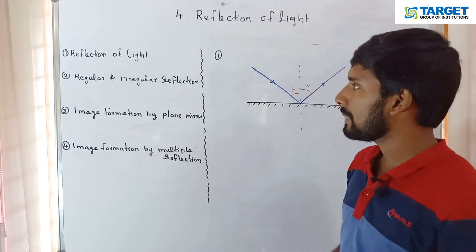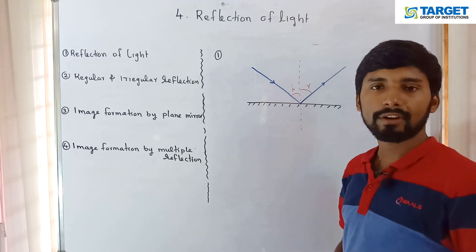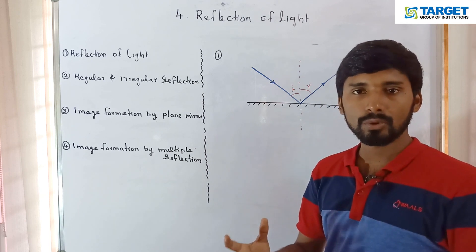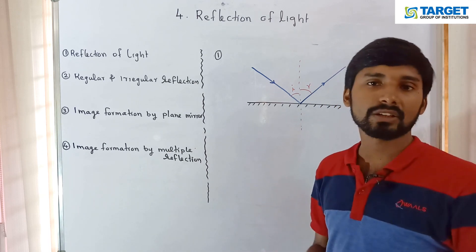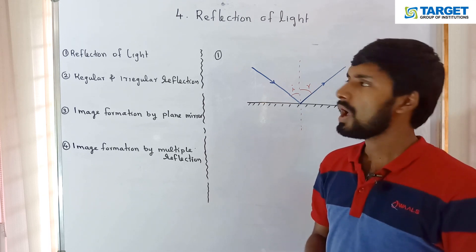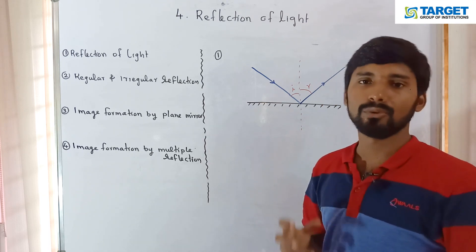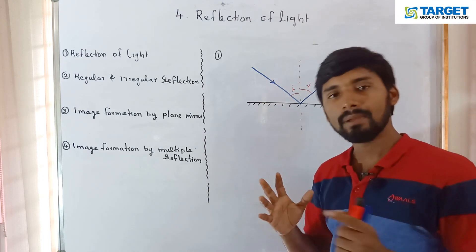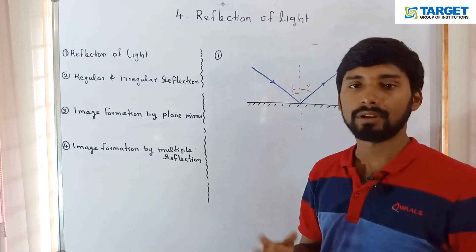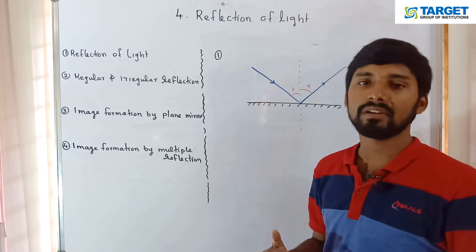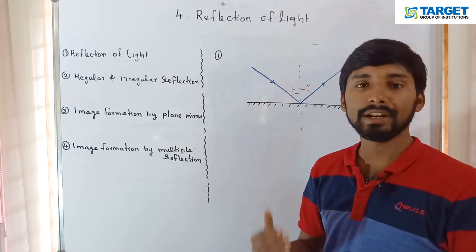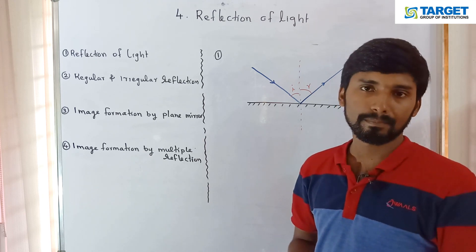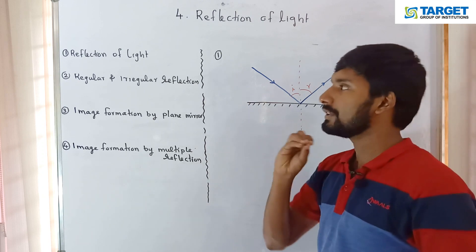So the first topic is reflection of light. What is reflection of light? Light is a wave — specifically, an electromagnetic wave, while sound is a mechanical wave. For mechanical waves, a medium is essential. Light, being an electromagnetic wave, can travel without the presence of any medium.